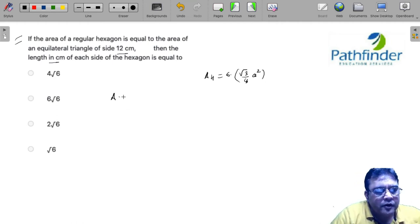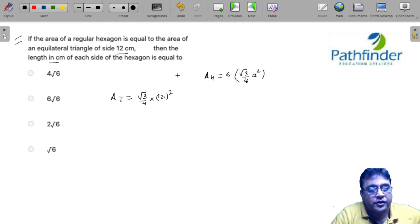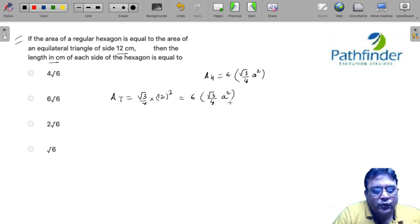What is the area of the equilateral triangle? Root 3 by 4 into 12 square. And if this area, as per the question's condition, is equal to the area of hexagon, then I can equate it as root 3 by 4 times A square.